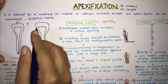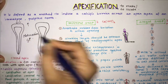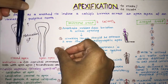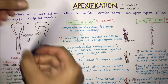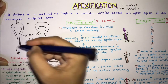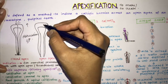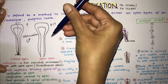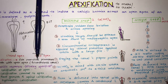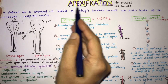Now in a root canal treatment, we have the obturation, where we fill the canal with the obturating material — that is gutta-percha. Now consider a closed apex: when you're inserting your gutta-percha into the canal, there is a stop and your gutta-percha will stop there. But if the apex is open, your gutta-percha will go into the periapical space because there's no stop.